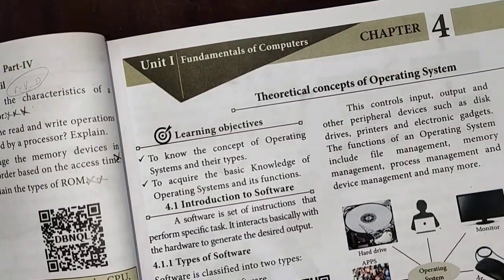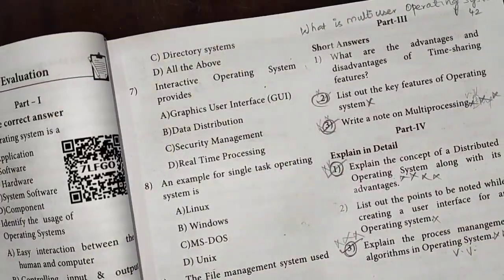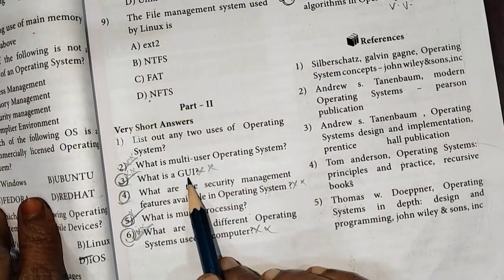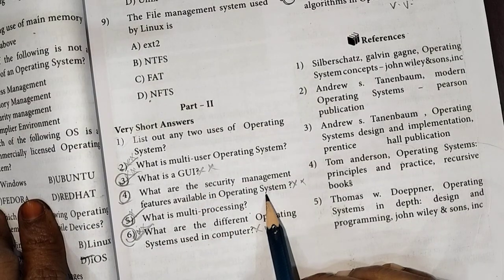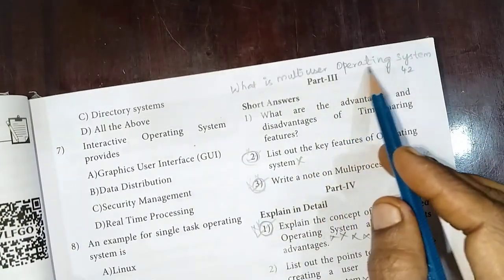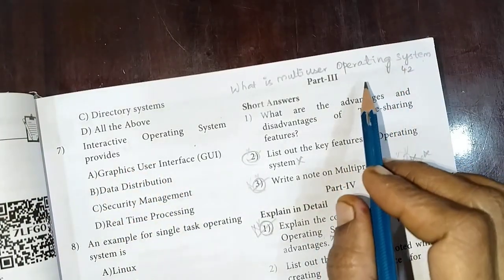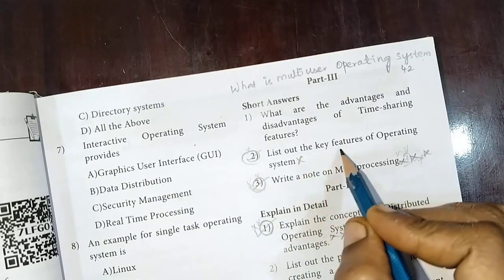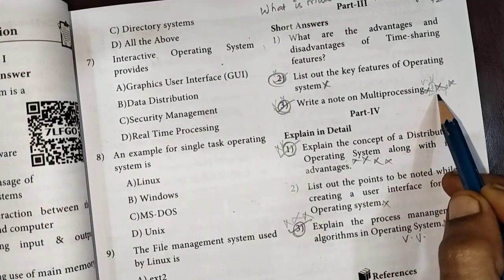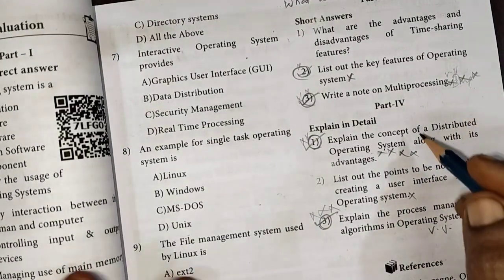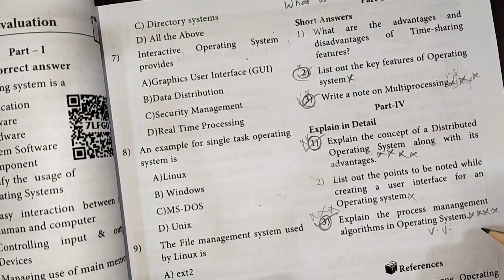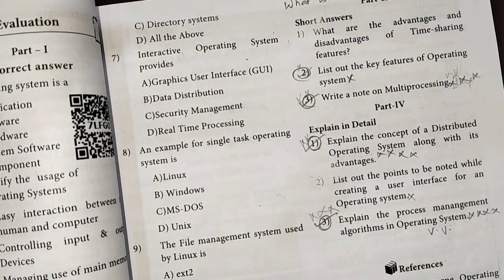Chapter 4: Theoretical Concepts of Operating System, page 47. For 1-mark questions, very short answers: what is a Multi-User Operating System (important), GUI (4 times), Multi-Processing (important, 6th question 4 times). For 3-mark questions: list out the key features of an Operating System (important), write a note on Multi-Processing (very very important, repeated). For detail questions: explain the concept of Distributed Operating System (5 times, 5 districts), Process Management Algorithm in Operating System — 1st and 3rd are very very important, compulsory.